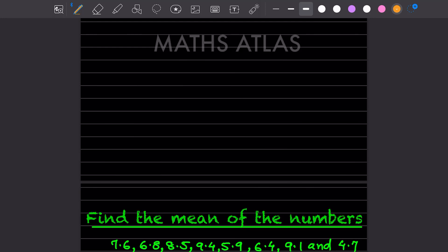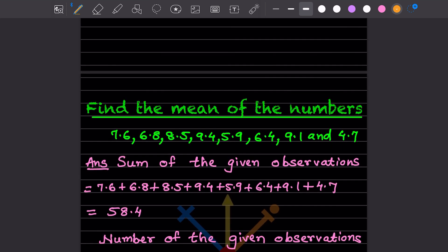Hi learners, welcome to my YouTube channel. Thanks for joining me for another math session. Today let us see how to find the mean of the numbers. These are the numbers given: 9.6, 6.8, 8.5, 9.4, 5.9, 6.9, 9.1, and 9.7. You have to find the mean of it.